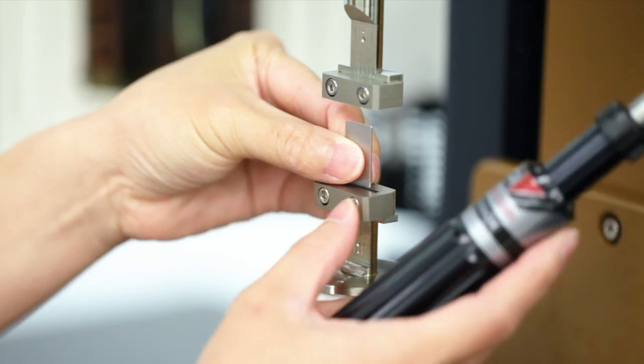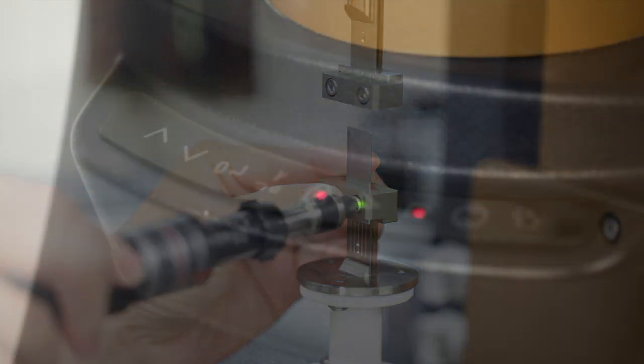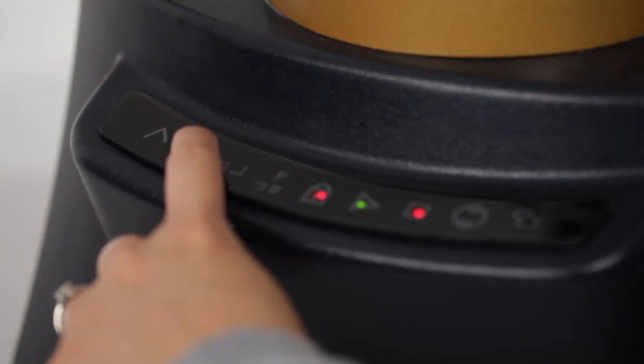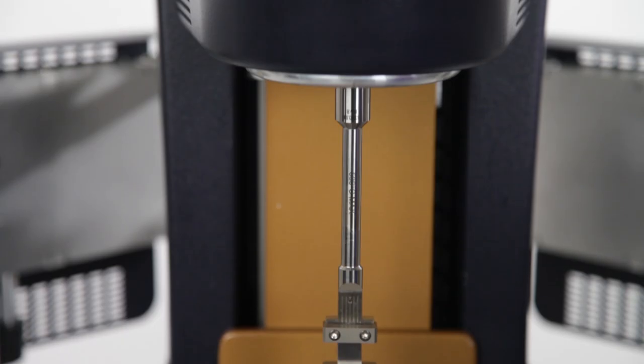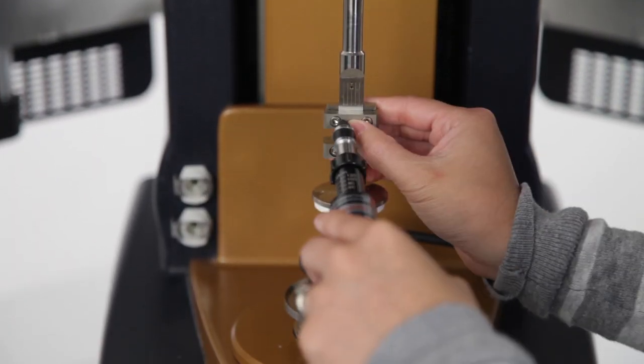Insert the alignment steel shim into the lower geometry fixture. Using the up and down buttons on the keypad, carefully lower the upper geometry until the steel shim is fully inserted into the anvil.